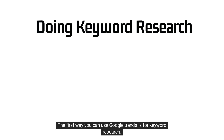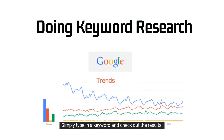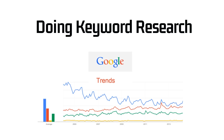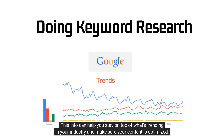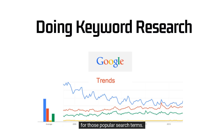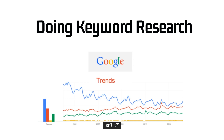The first way you can use Google Trends is for keyword research. Simply type in a keyword and check out the results. You'll see how often it's being searched and even get some related keywords and topics. This info can help you stay on top of what's trending in your industry and make sure your content is optimized for those popular search terms.